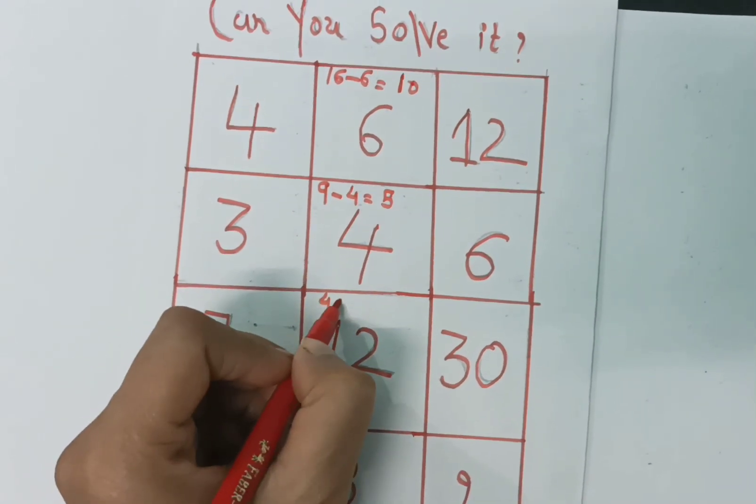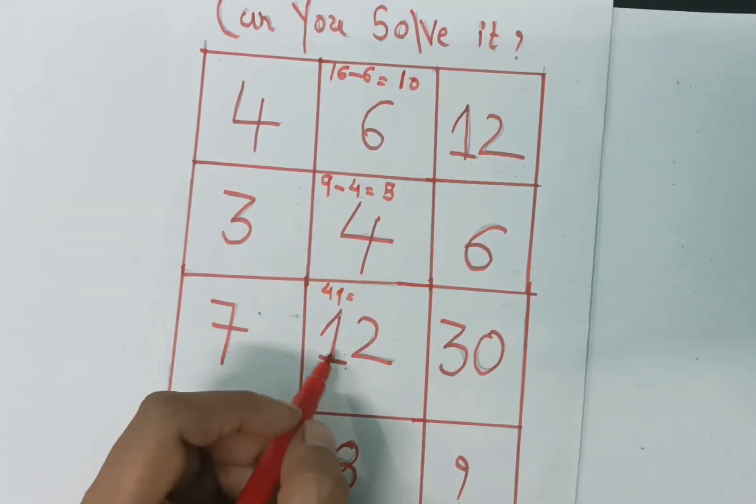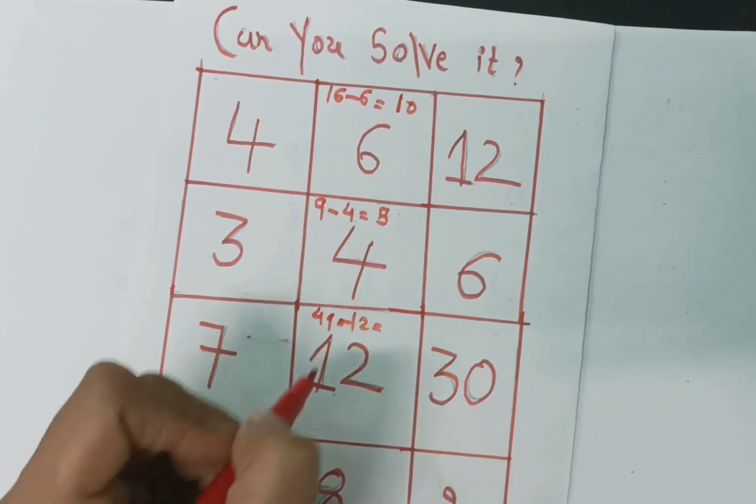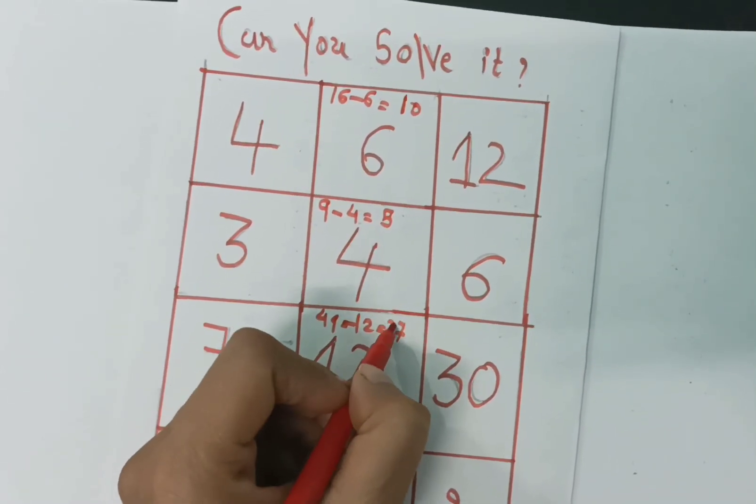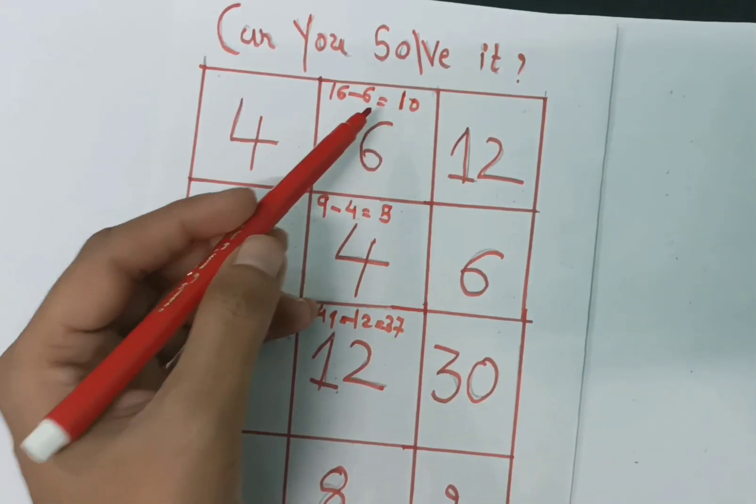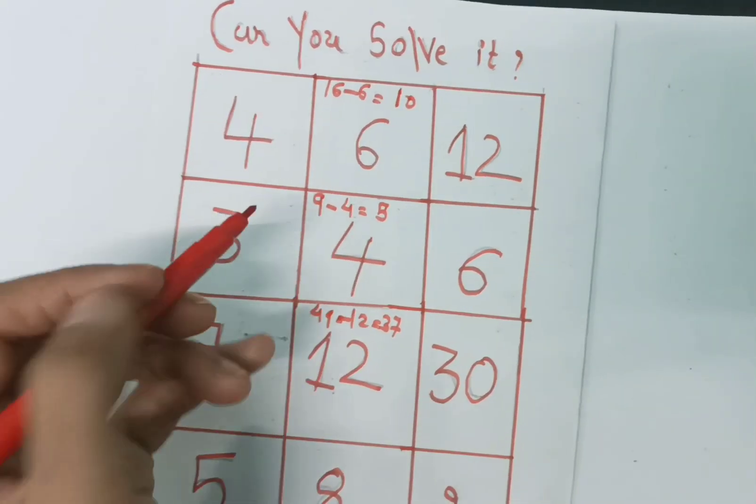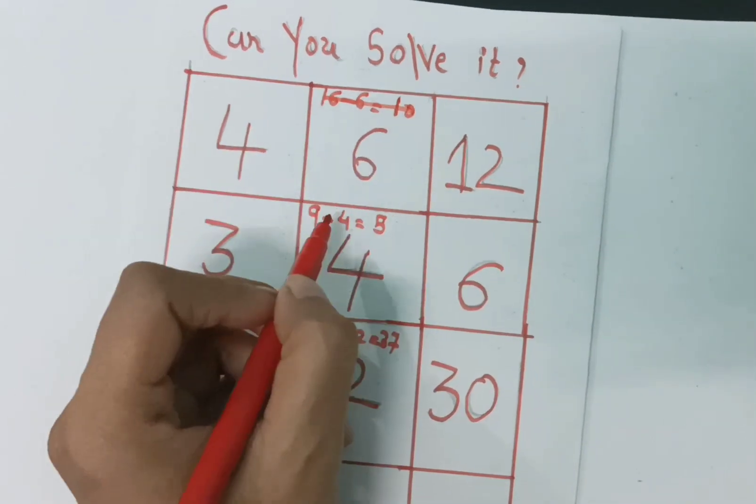7 square is 49, and subtract 12, so we get 37. So the difference we get is unequal, so it cannot be possible. The possibility is gone.